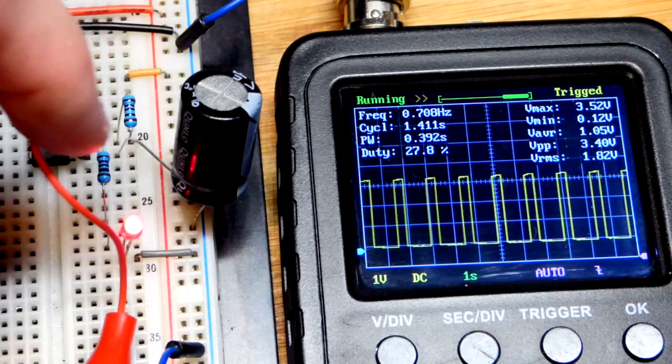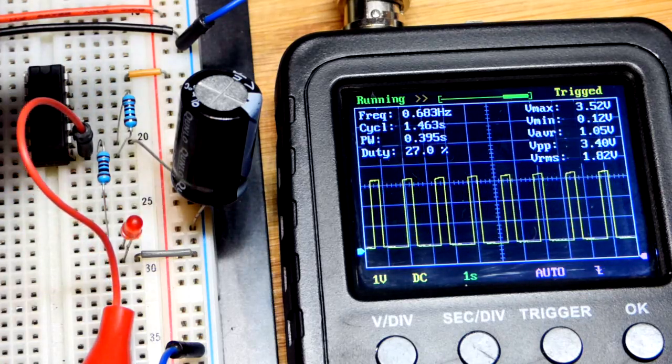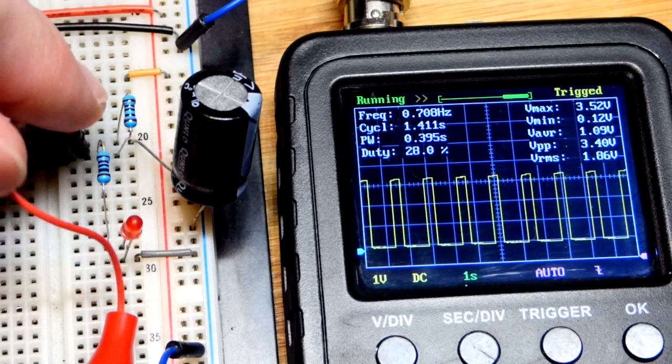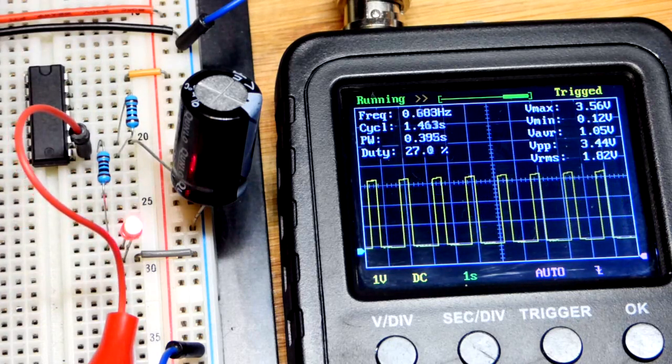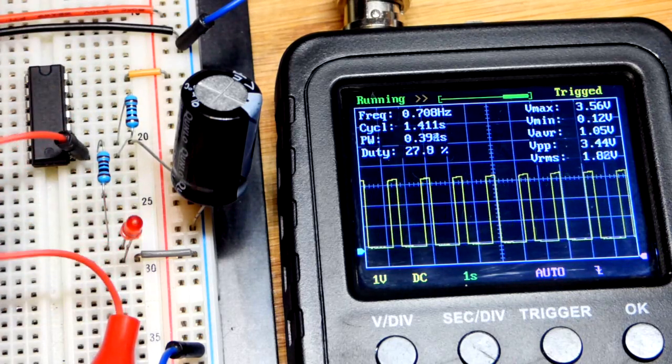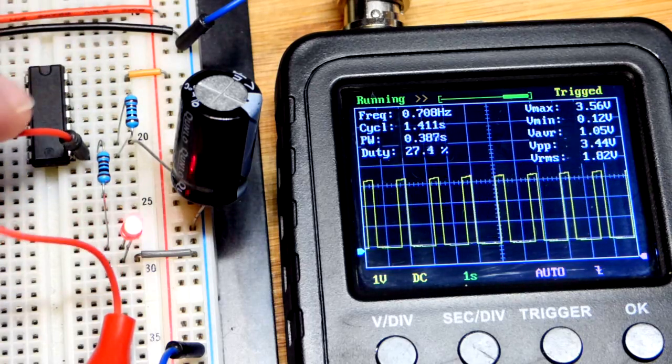And so, we can adjust that really easily. I'm finding that I need to use, well, this is a one kilo ohm resistor setting the timing. When I tried 10 kilo ohms, that was too much resistance I've been finding. So, one kilo ohm works. So I'm going to stick with that.